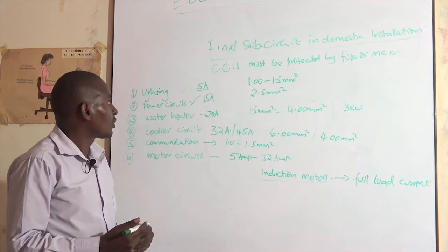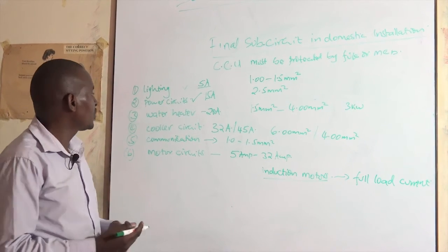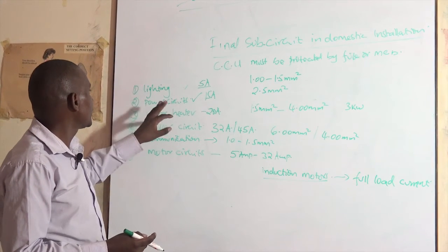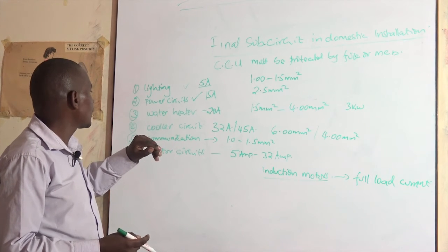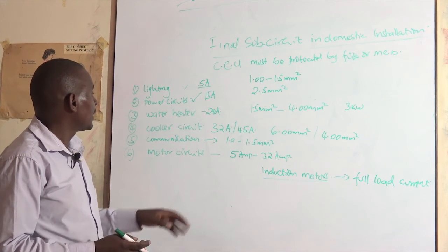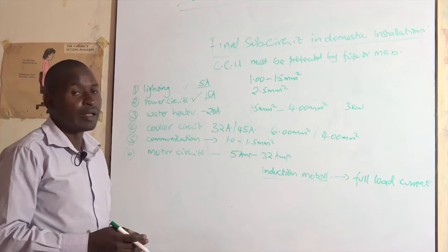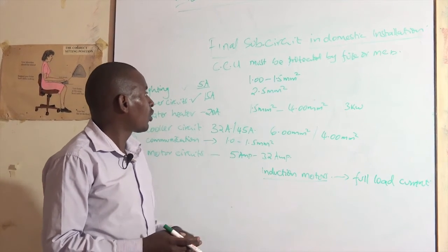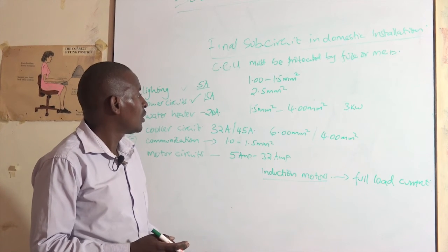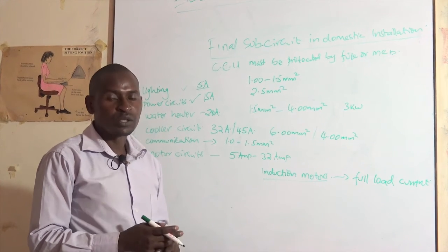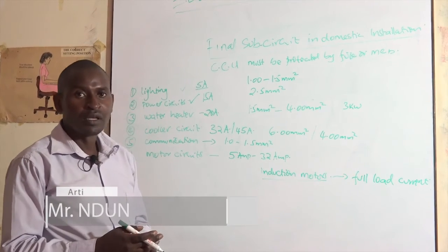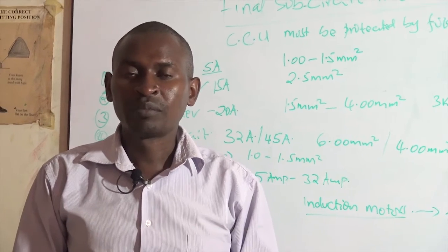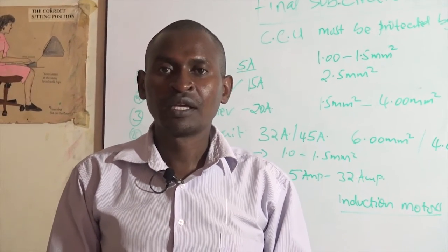To summarize, in a domestic installation we have a maximum of six final sub-circuits: lighting, power, water heater, cooker circuit, communication, and motor circuit. We have also given the tentative protection ratings plus the approximate cable sizes that should be observed, so that we do an installation that is very safe. With that, we come to the end. I was your presenter, Daniel Ndongo. Continue watching, thank you.